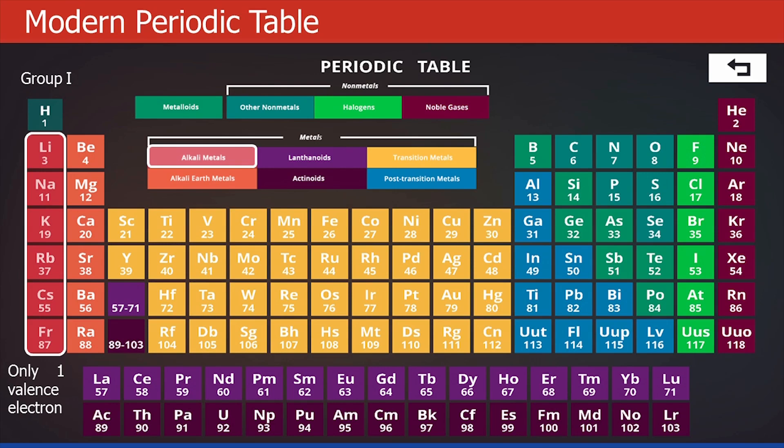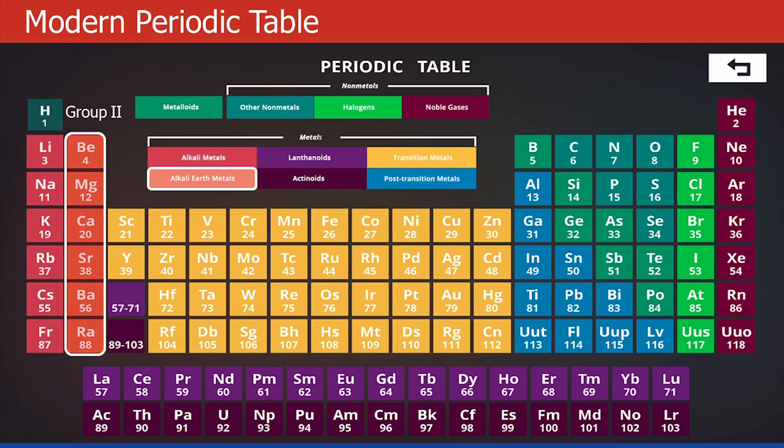And we learned that all elements try to achieve their nearest noble gas configuration. So by now, you must have guessed why these metals are so reactive. Because they just have to lose one electron. Similarly, for the alkali earth metal, which is our group 2, they each will have 2 electrons in their valence shell. And again, losing 2 electrons, though more difficult than losing 1 electron, will be easier. So even these metals are very reactive.